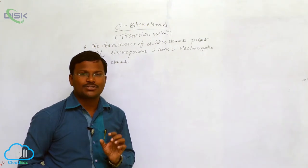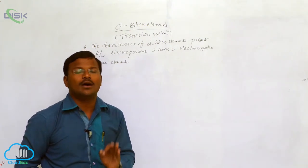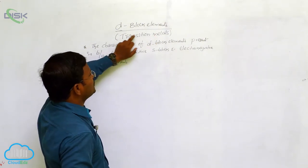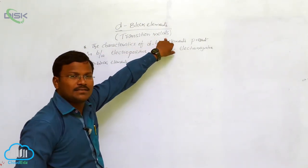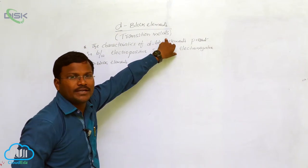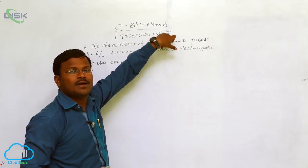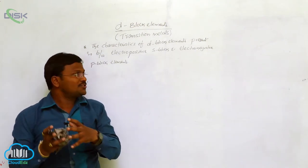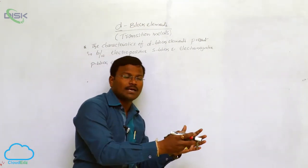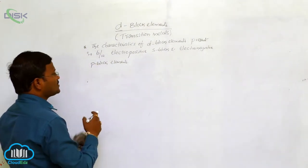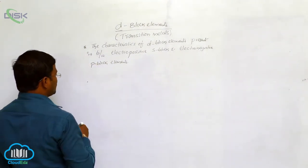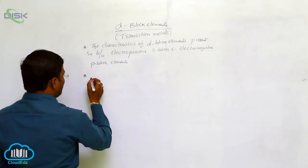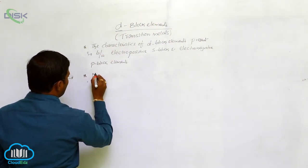All the elements belonging to D-block and F-block are metals, hence they are called transition metals. The characteristics of D-block elements are transferred — transition takes place between S-block to P-block — hence it is called transition metals. All the elements belonging to D-block have metallic character.